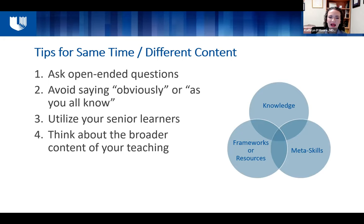You can ask probing questions to the more junior learners, and when you reach a point where they don't understand the information, switch to the resident and go up the hierarchy. But since pimping and the Socratic method are off the table, what are some tips for same time, different content? Start by thinking about asking open-ended questions — this encourages discussion and people can chime in from all learning levels so that you can find out where they are.